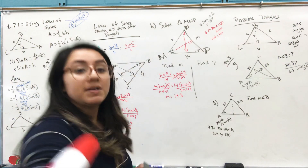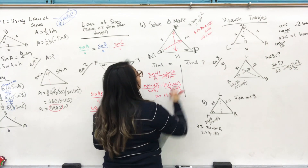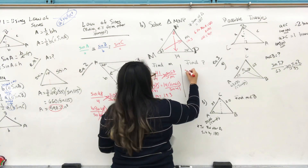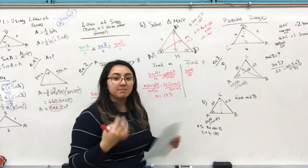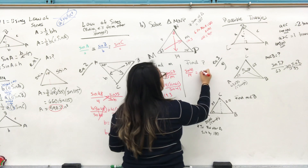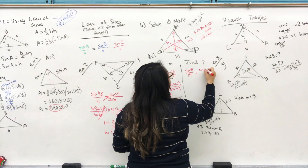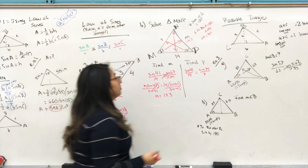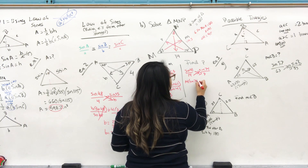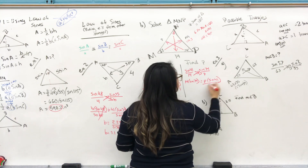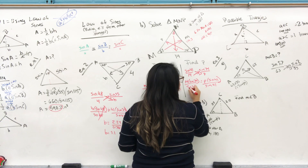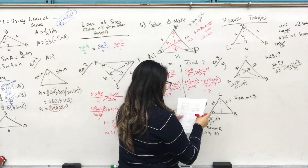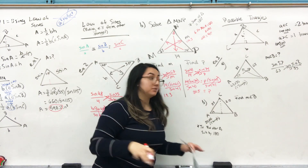Now find p. We can stick with the original known pair: sine of 41 over 14. To find p, use sine of 74 over the opposite side p. Cross multiply: 14 · sine of 74 = p · sine of 41. Divide both sides by sine of 41, and 14 × sine of 74 ÷ sine of 41 gives you p = 20.5. That's all for this part — there will be a second video because the lesson is a little long.